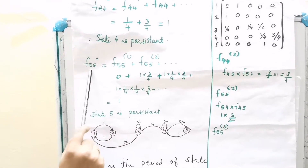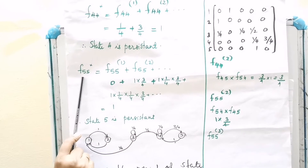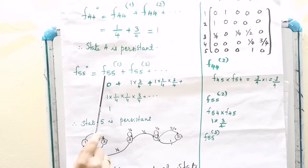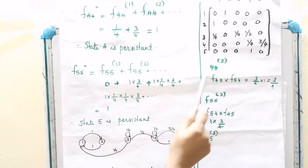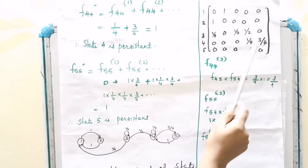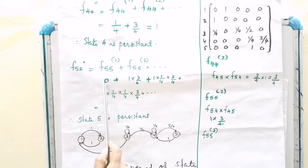What about state 5? F551 — starts from 5, reaches 5 in 1 step — that is 0.